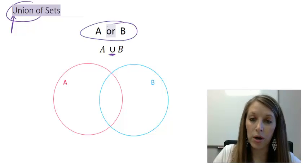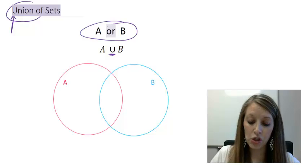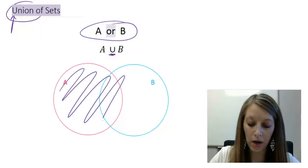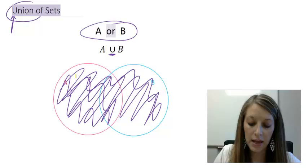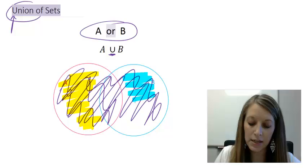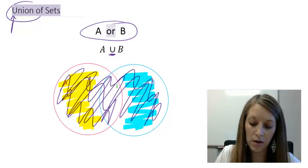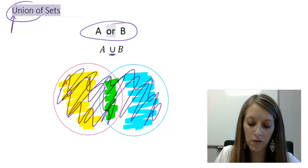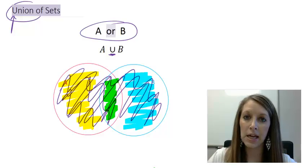If I want to talk about the union of these two sets, then it is A or B. And that actually is anywhere in both of these circles. It can be just in the A circle like over here. It can be just in the B circle like over here. Or it could be in the overlap like we saw back in the and statement.